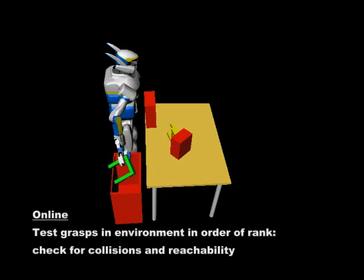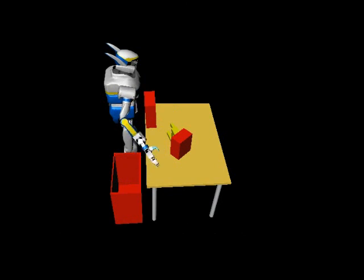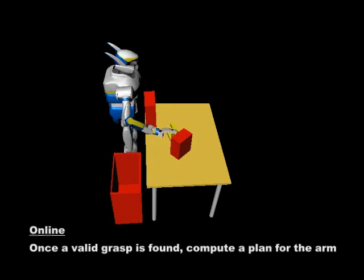Grasps are then tested in order of rank. They are checked for collisions and reachability. Once a valid grasp is found, we compute a plan to reach and grasp the object using bi-directional RRTs.